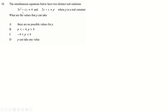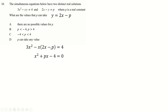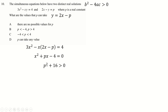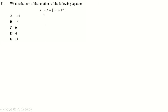Question 10: two distinct solutions means we rearrange for y, substitute into the other equation, and require b² − 4ac > 0. Expanding and collecting terms, b = p, a = 1, c = minus 4, so we get p² + 16 > 0. But this is a perfect square plus 16, which is always positive, so p can take any value.